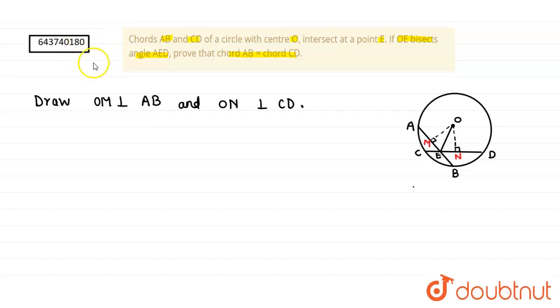Then now, we will compare that is in triangle OEM and triangle OEN. In both of these triangles, angle OEM is equals to angle OEN because both are 90 degrees.